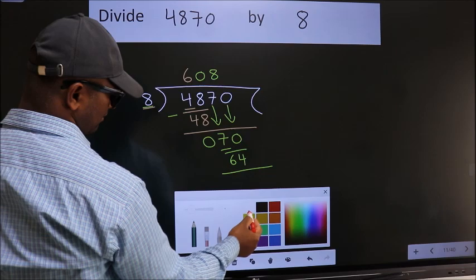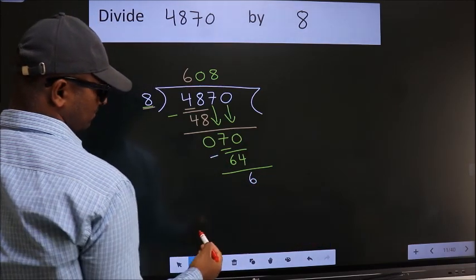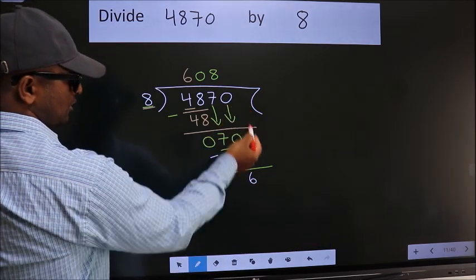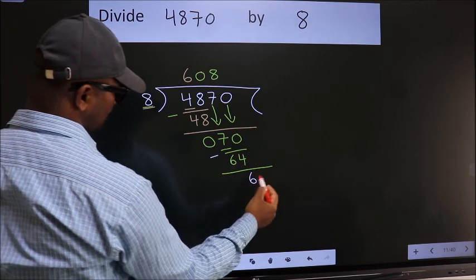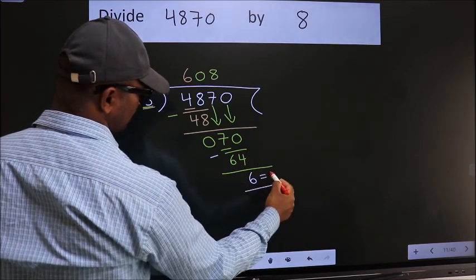Now we subtract. We get 6. No more numbers to bring down, so we stop here. This is our remainder. This is our quotient.